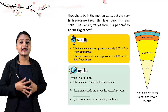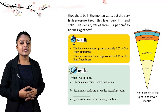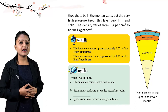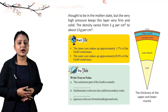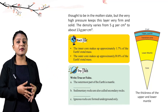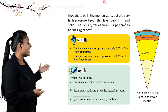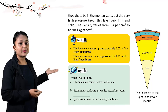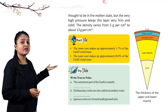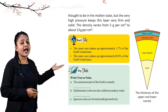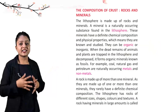Fact file: the inner core makes up approximately 1.7% of the earth's total mass. The outer core makes up approximately 30.8% of the earth's total mass. The image shows the thickness of the upper and lower mantle.